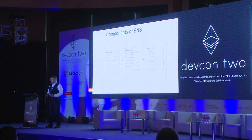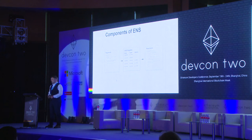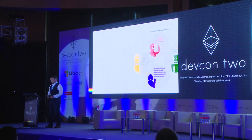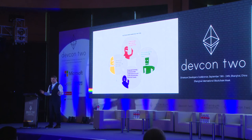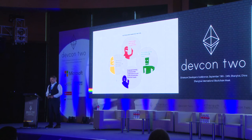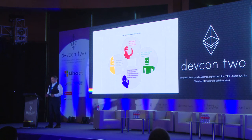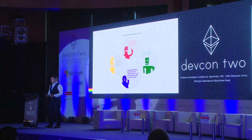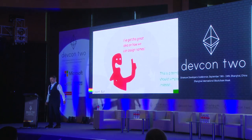Those are the basic components of ENS and that pretty much describes the entire technical implementation. The remaining component — which you'd think is straightforward but really isn't — is governance. Governance is an ongoing issue. The questions are: how should we administer the domain system? Who should we assign names to? Should they have to pay? Who should get the money? And so forth.